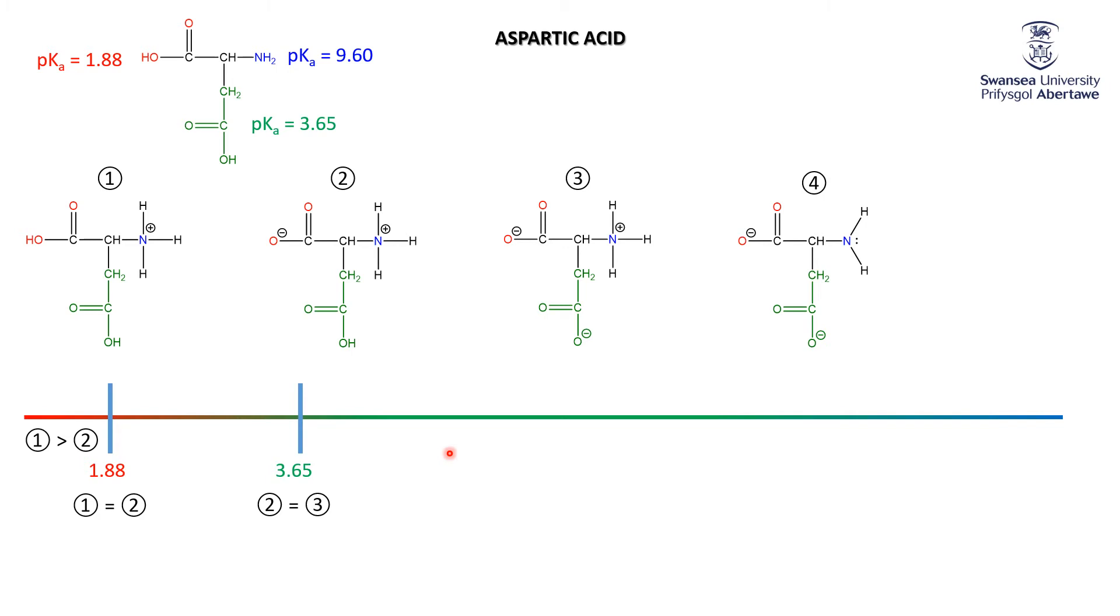We've got a fourth possible structure at very high pH where everything's in the base form. We've already turned both acids into their conjugate base form in structure three, but now we're turning this conjugate acid back into its base to get structure four. At very high pH, all you've got is four. The next point of interest is at pH 9.6, where the pH equals the pKa of this group. At this point, the concentration of three equals the concentration of four.